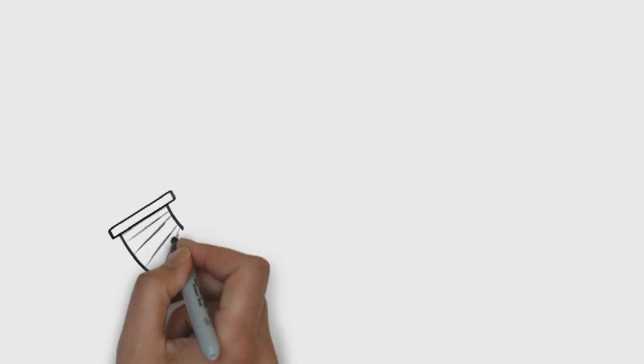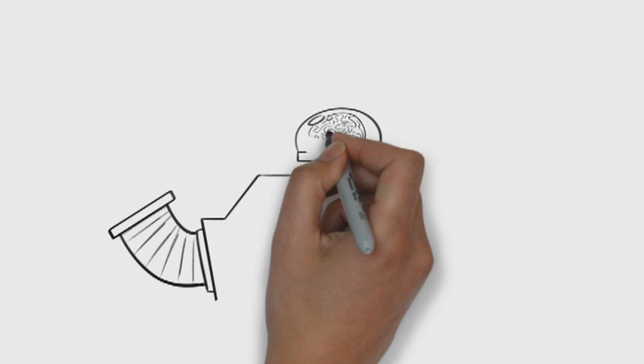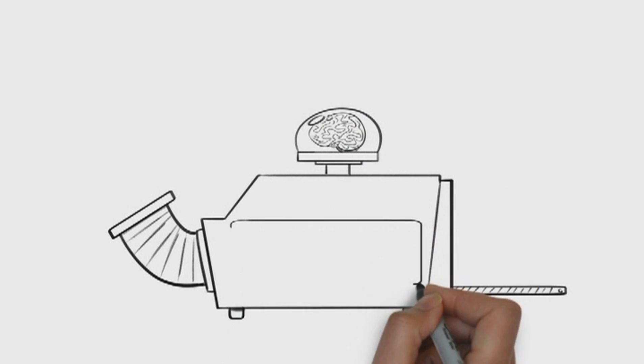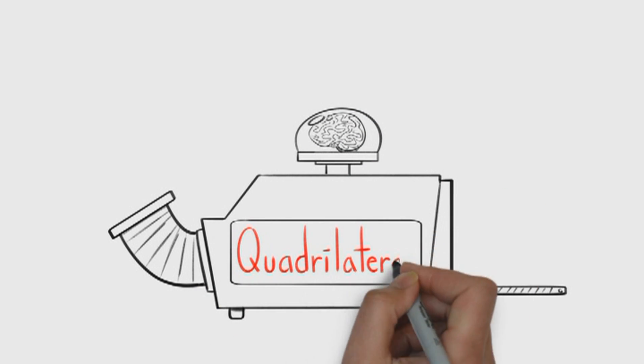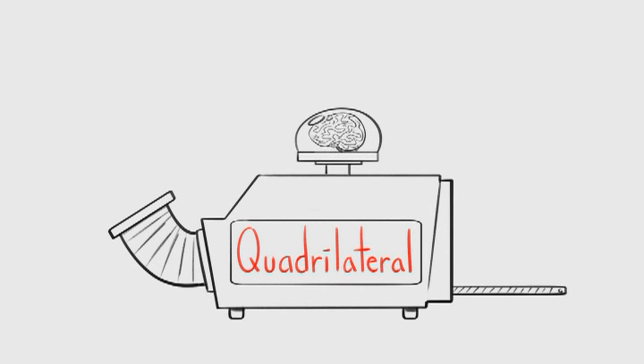Well, in the United Methodist Church, we have a tool for this. And we call it the Quadrilateral. At its most basic level, the Quadrilateral is a method we can use to think about theology.